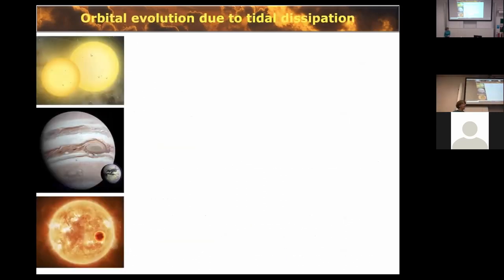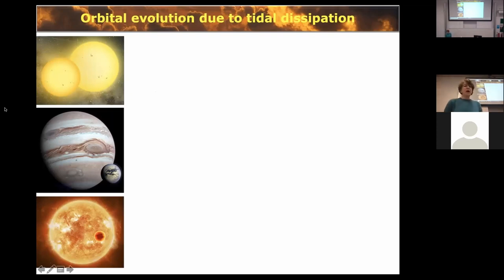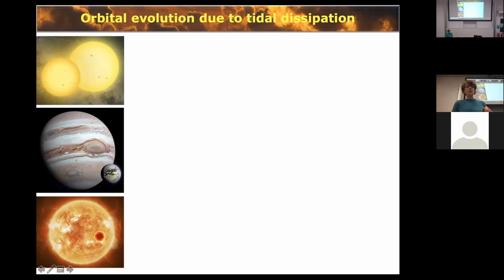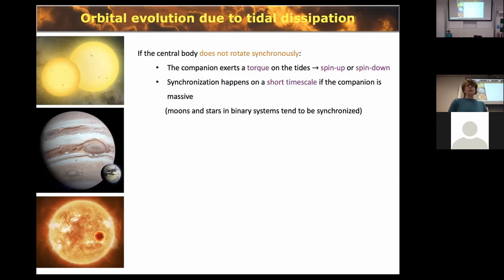The systems I have in mind are: binary systems where both components are stars comparable to the sun with large convective envelopes; systems where the central object is a giant planet like Jupiter with tides excited by a moon; and hot Jupiter systems where a Jupiter-like planet very close to its host star raises a significant tide in the star. I'm not discussing tides raised on the moon by the giant planet.